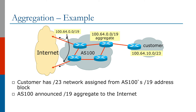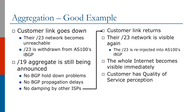In the good example, imagine the same scenario where the customer has a slash 23 network assigned from AS100's slash 19 block. In this scenario, AS100 announces its slash 19 aggregate to the internet. If the customer link goes down, their slash 23 network becomes unreachable and is withdrawn from AS100's IBGP. However, the slash 19 aggregate is still announced to the internet.